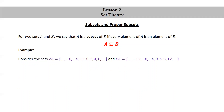Another example. Consider the sets 2Z, the set of even integers {..., -6, -4, -2, 0, 2, 4, 6, ...}, and 4Z, which are the integer multiples of 4, the set {..., -12, -8, -4, 0, 4, 8, 12, ...}. Then 4Z is a subset of 2Z. Every multiple of 4 is also a multiple of 2.